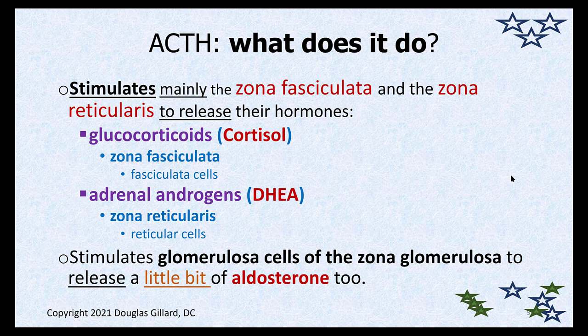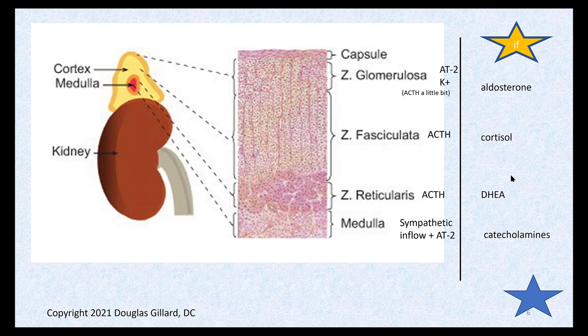ACTH also stimulates the release of adrenal androgens — the main ones being DHEA and DHEAS. It also stimulates glomerulosa cells of the zona glomerulosa to release a little bit of aldosterone, though that's not super clinically important.